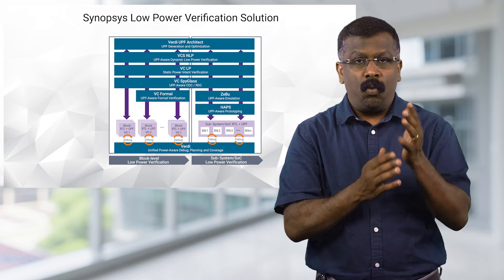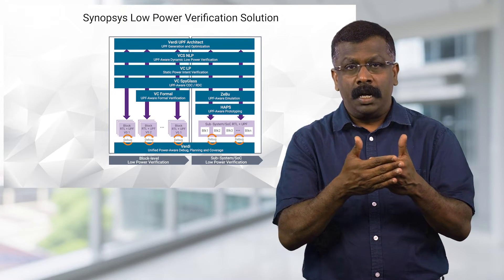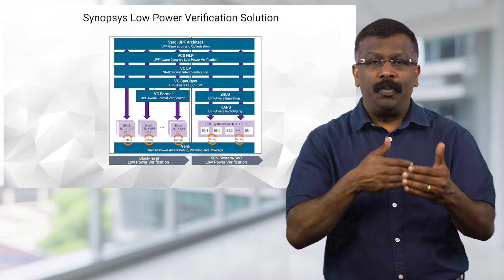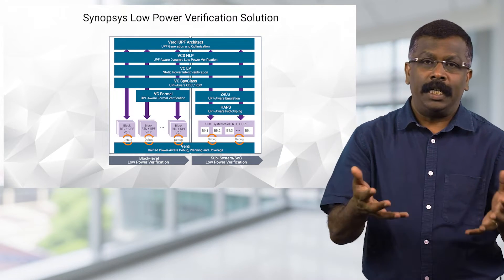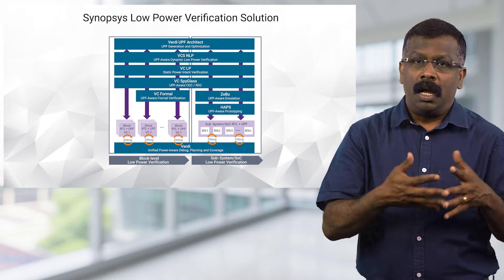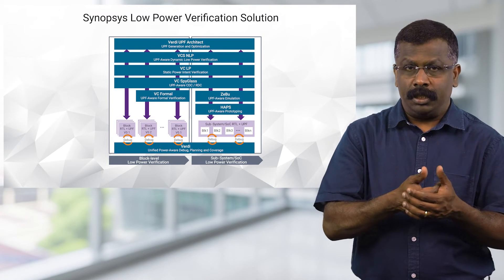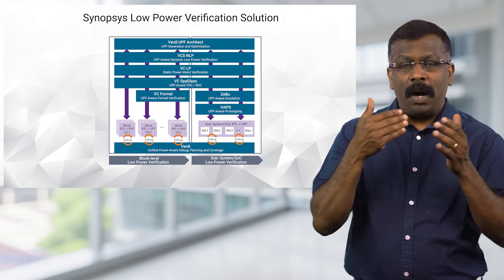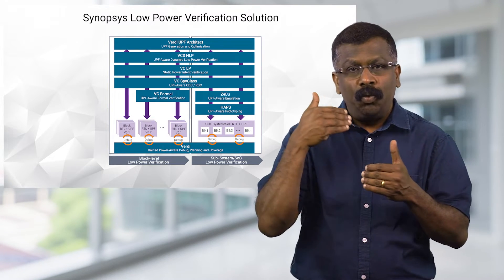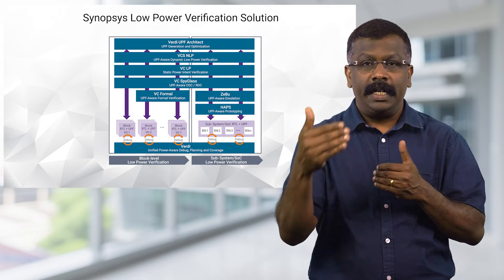Now, once you have this sorted out, the next step would be to validate the UPF for complete nets, even at the initial stages, so that power intent is fully functionally validated in the flow.